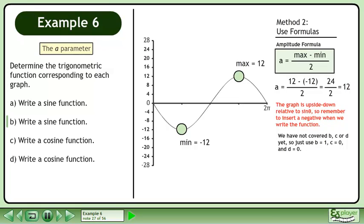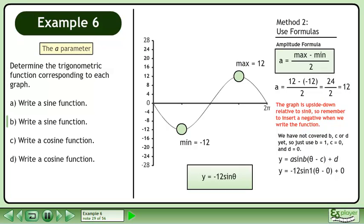We have not covered b, c, or d yet, so just use b equals 1, c equals 0, and d equals 0. Plug the parameters into the sine function. Simplify to get the function y equals negative 12 sine theta. This is the same function we obtained using method 1.